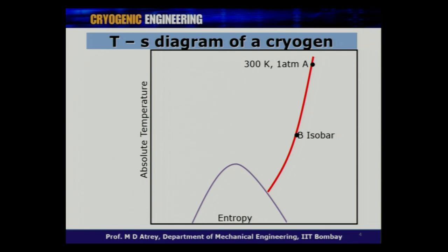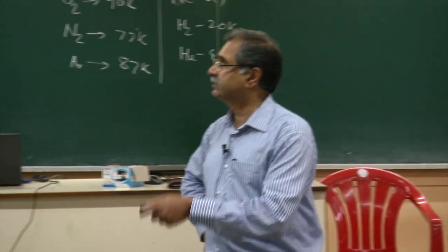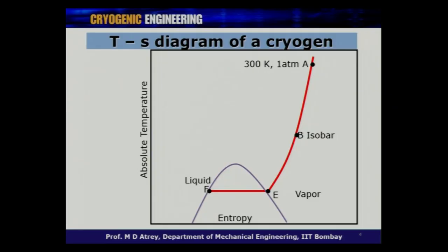This is a constant pressure line, and from here you have to come inside the dome — this could be at cryogenic temperature, say 77 Kelvin. Point E is saturated vapor and F is saturated liquid. The length EF corresponds to the latent heat of that fluid. So we are talking about bringing temperature down from 300 Kelvin to this point, and to do that, we compress and expand the gas.